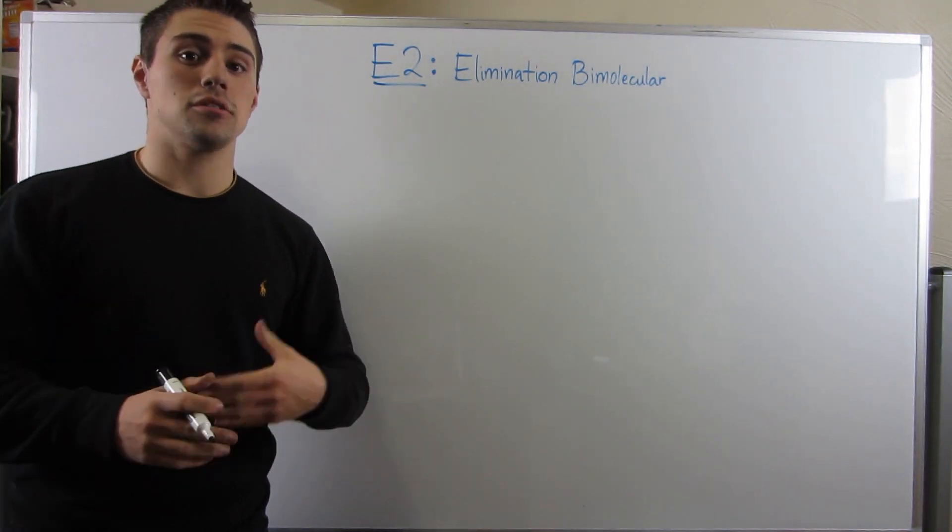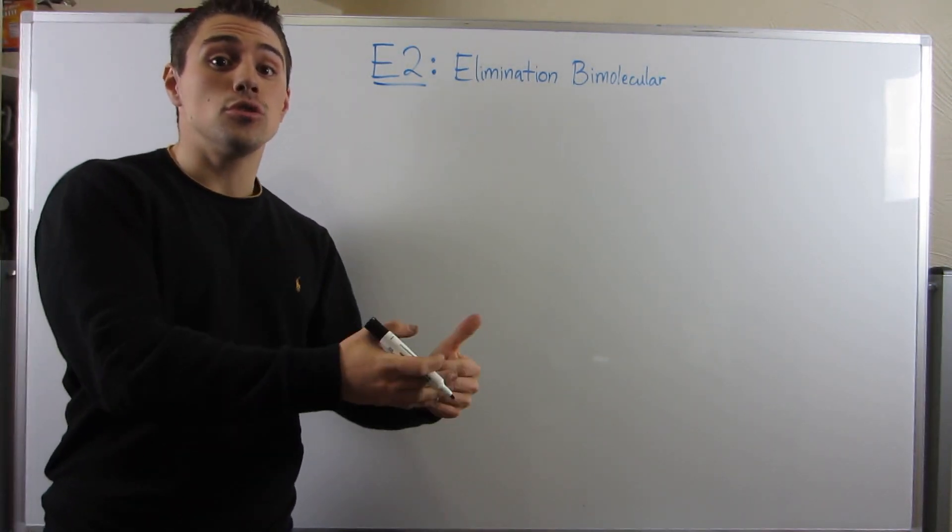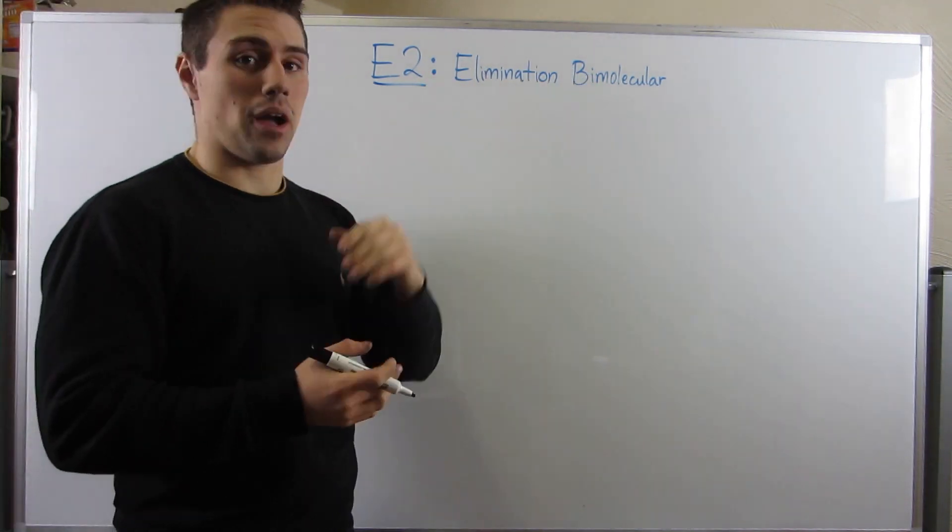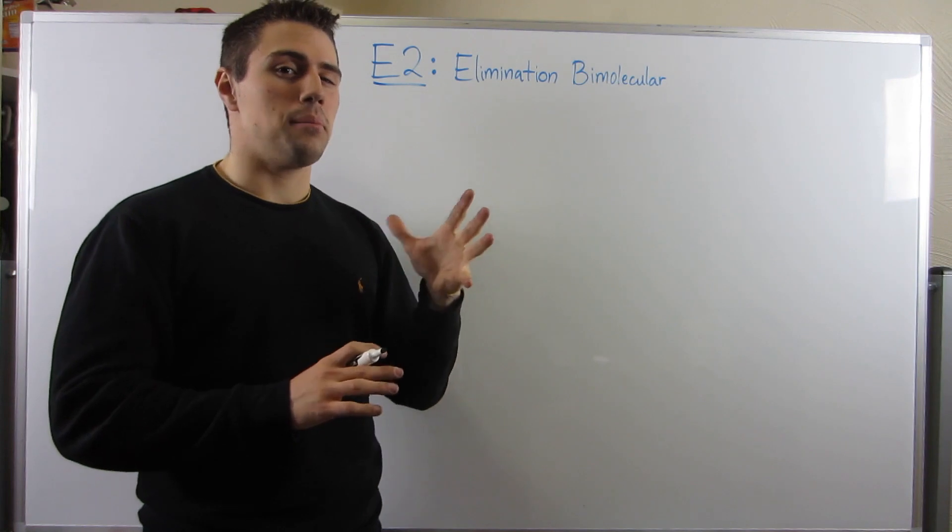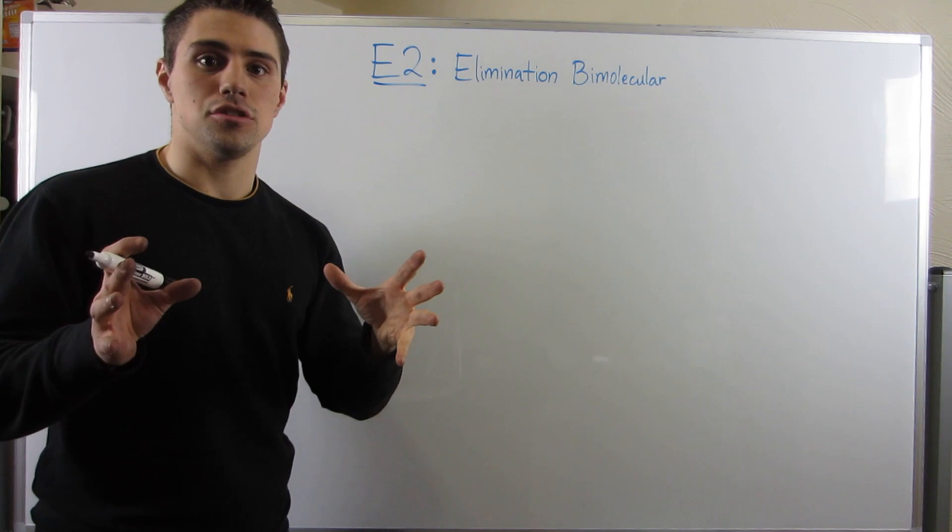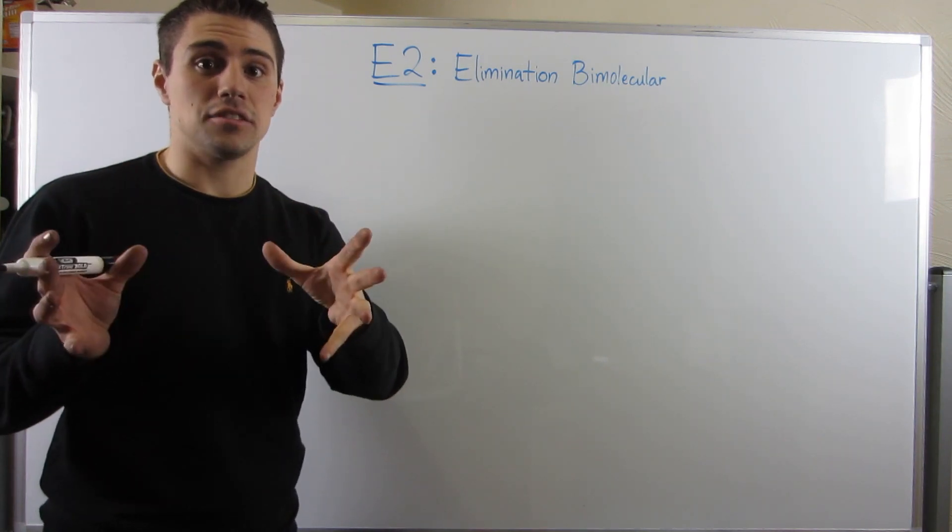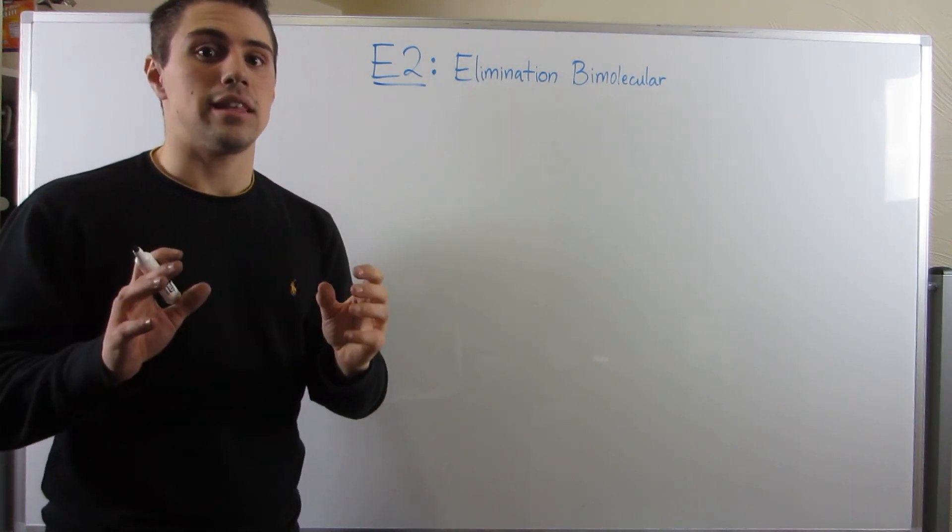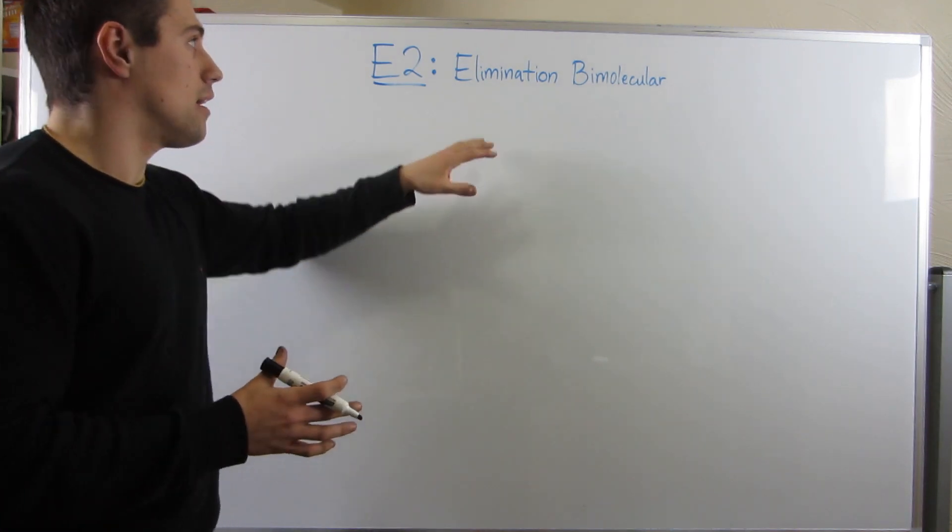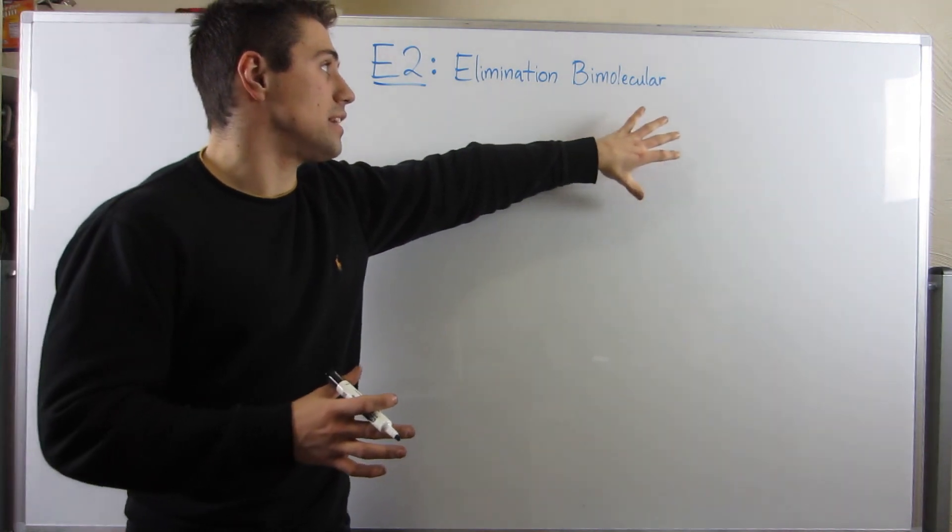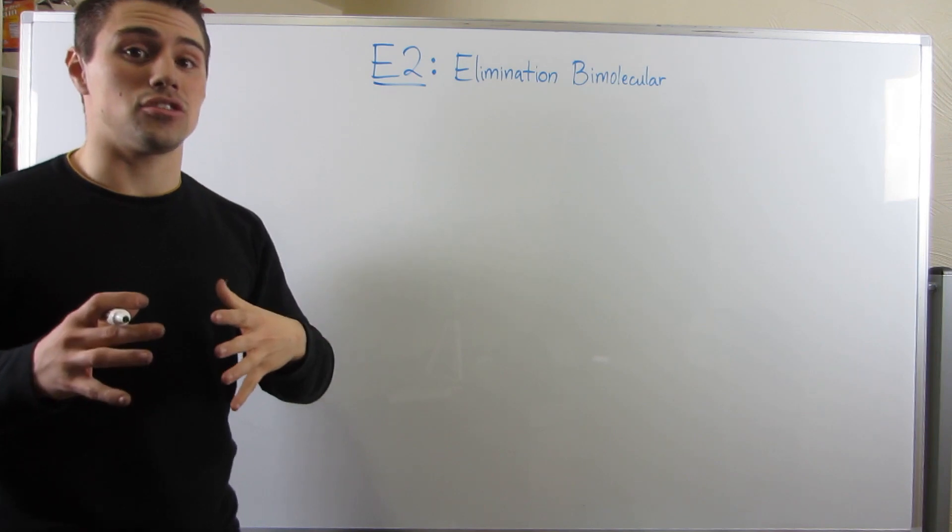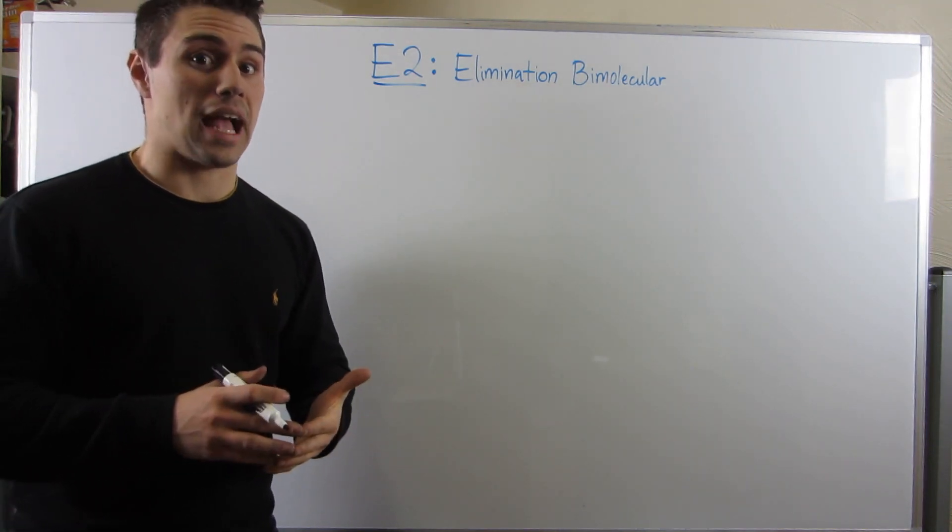Okay gang. Now that we talked about SN2 substitution bimolecular, I want to talk about E2, elimination bimolecular. I think I missed this in the last video, but bimolecular means the concentrations of both your reactants can affect the reaction rate - your substrate and your nucleophile. Let me give you an example of E2, and then we can see what the differences between E2 and SN2 are, because they are competing reactions.